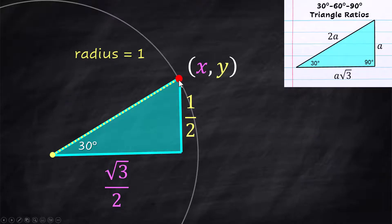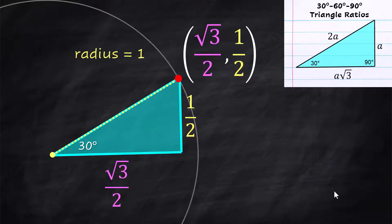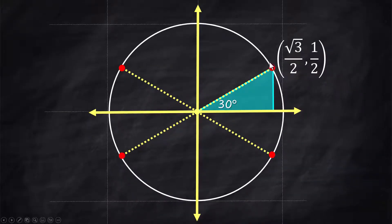The coordinates of the point have x, y coordinates and the x is going to be the horizontal movement and the y is going to be the vertical movement. Since we know the sides of these triangles, we know that x has to be the square root of 3 over 2 and y is 1 half. That's the coordinate for this first point in the first quadrant.